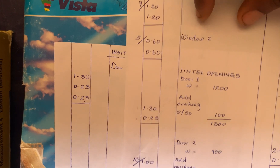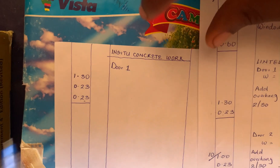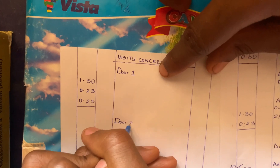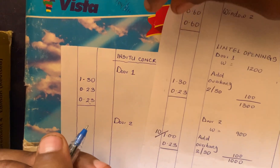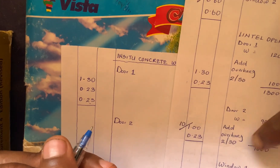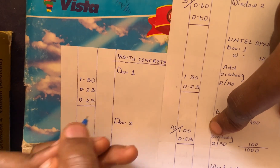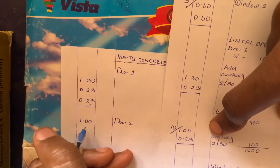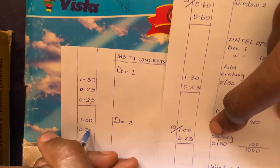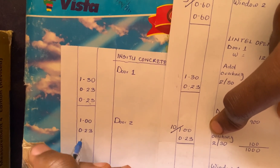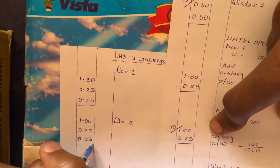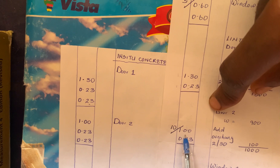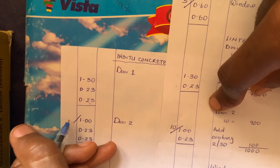After door one, we go to door two. The parameters for door two are as follows: 1.00 which is the length of the lintel, 0.23 which is the breadth, and the thickness of the lintel is 0.23. How many door twos do we have? Ten. So we are going to have 10 lintels of this size.